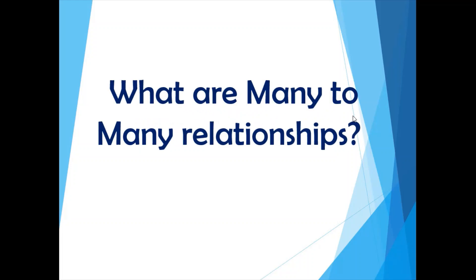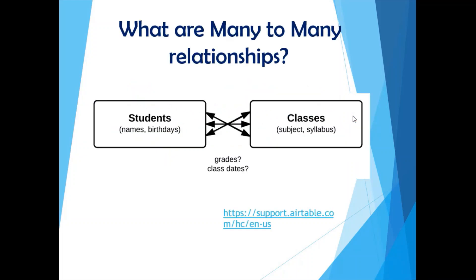The first question for today is: what are many-to-many relationships? You might already be aware of the different kinds of relationships that exist in a database model — there are one-to-one relationships, one-to-many relationships, and then many-to-many relationships. Many-to-many relationships is a data warehousing-related question because this is a very frequent occurrence in a data warehouse design, and there are special ways in which we need to implement them.